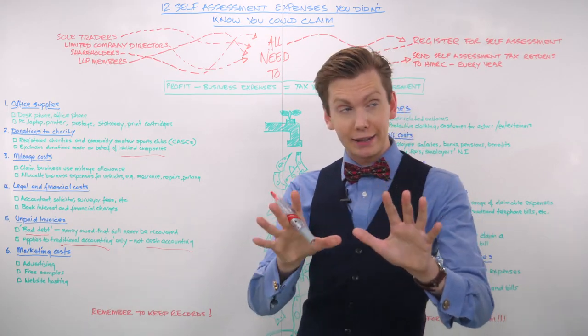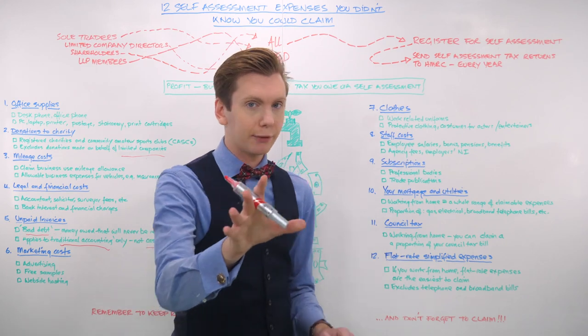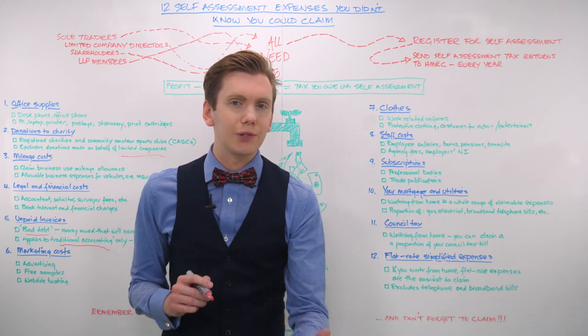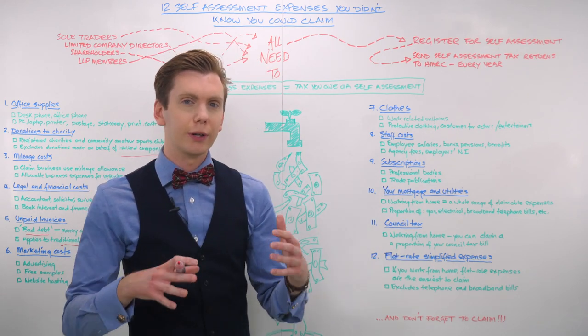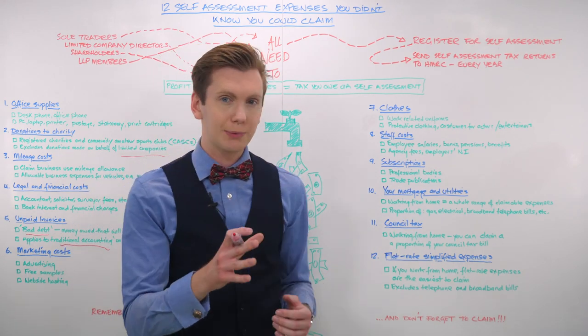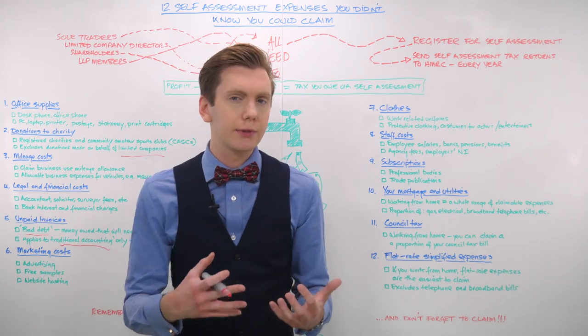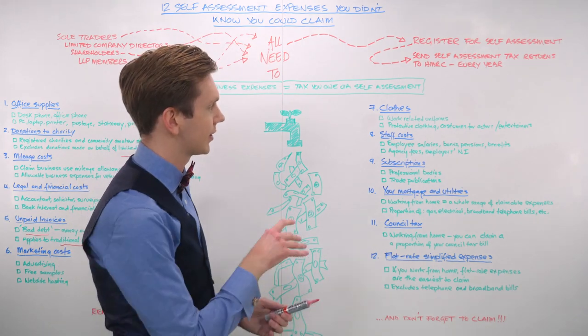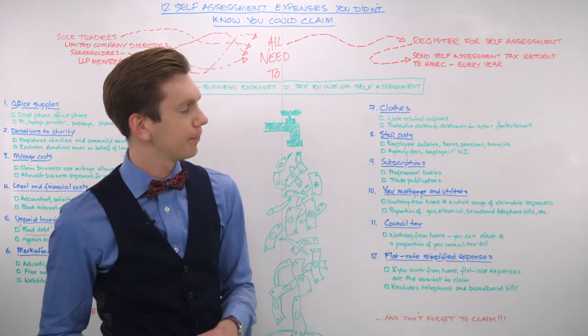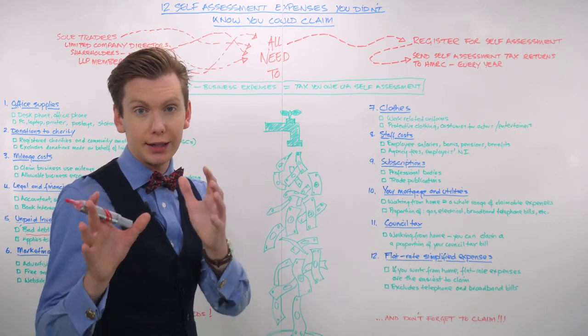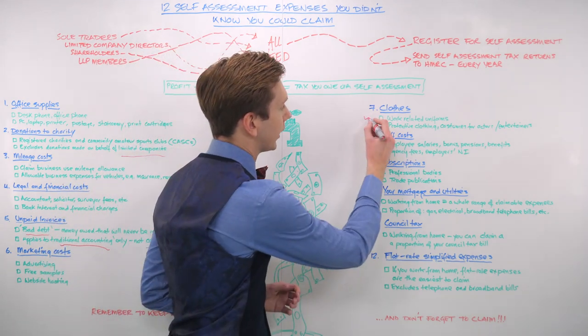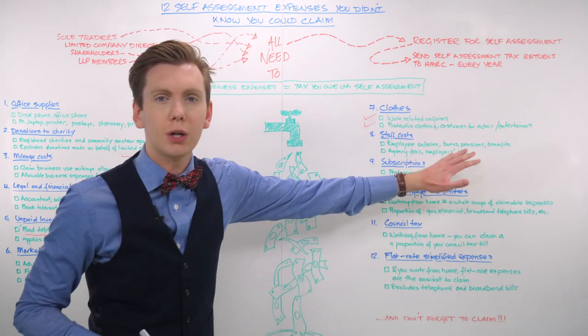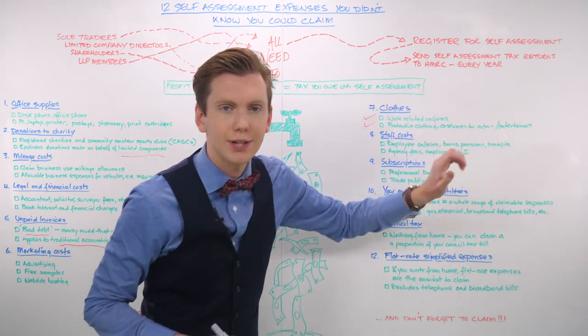Number seven, and we're going to move on to the other side of the board now and get ready for this, because number seven is your clothes. Now you are not allowed to claim the contents of your entire wardrobe as an allowable expense, but there are certain items of clothing that you can claim to reduce your self-assessment tax bill at the end of each financial year. Now permitted clothing expenses here will include things like work-related uniforms or protective clothing or maybe costumes for actors and entertainers.